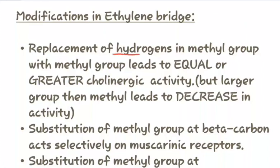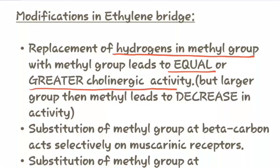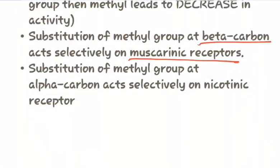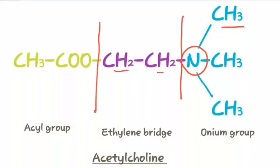Now let us study about the modifications in the ethylene bridge. Replacement of hydrogens with a methyl group leads to equal or greater cholinergic activity, but a larger group than methyl leads to a decrease in activity. Substitution of a methyl group at the beta carbon acts selectively on muscarinic receptors, and substitution of a methyl group at the alpha carbon acts selectively on nicotinic receptors.